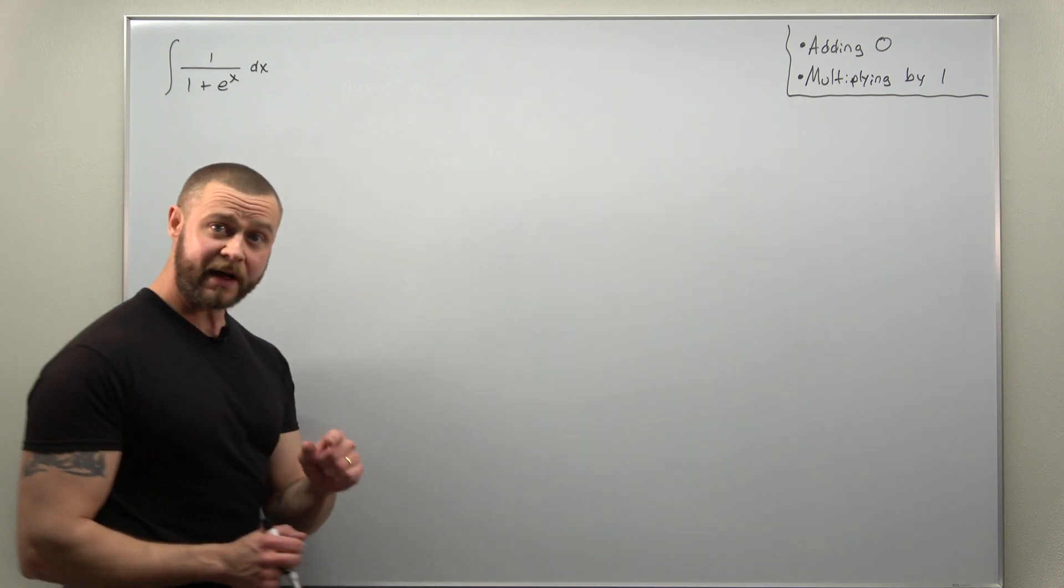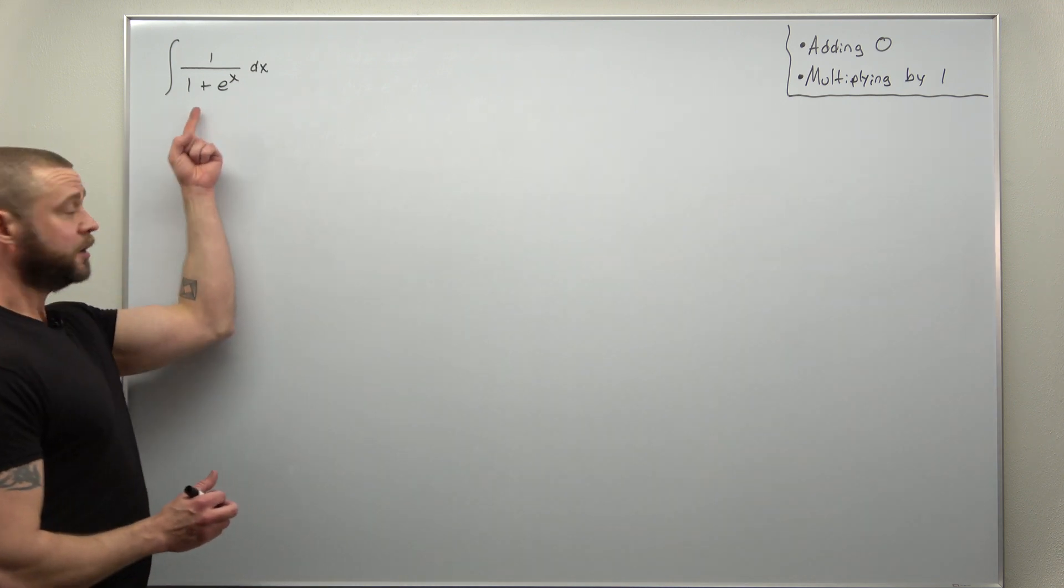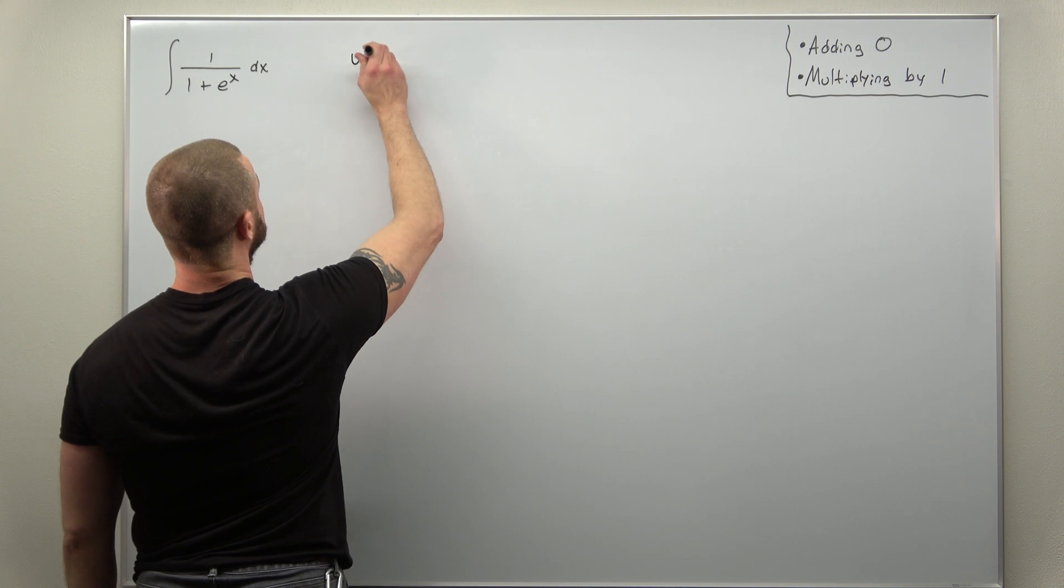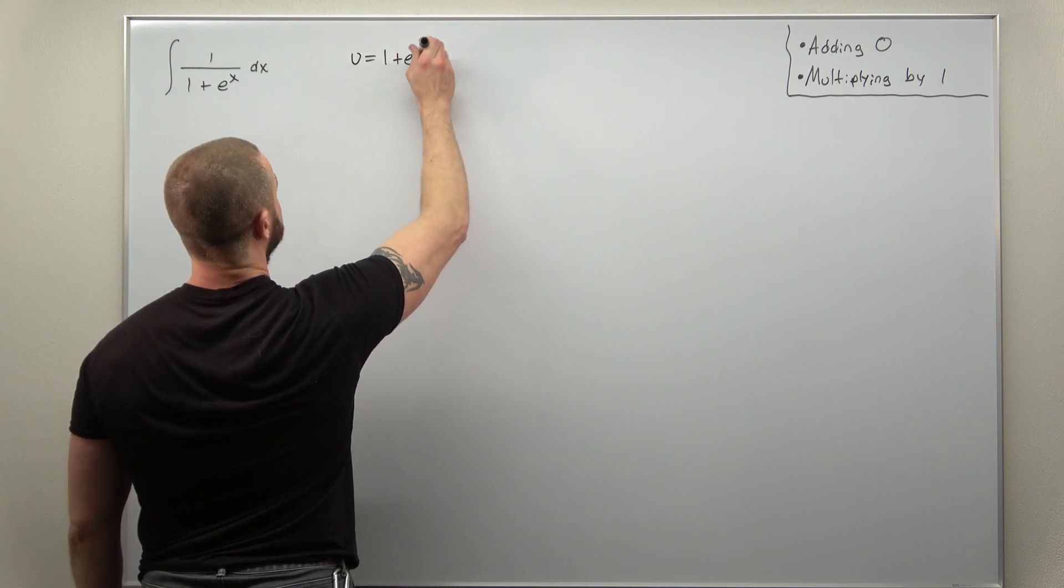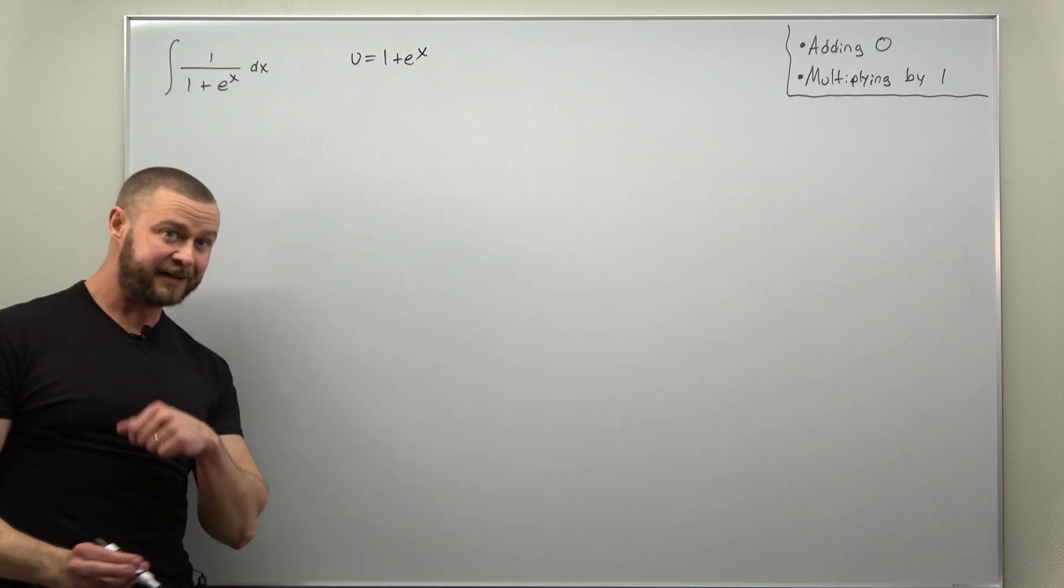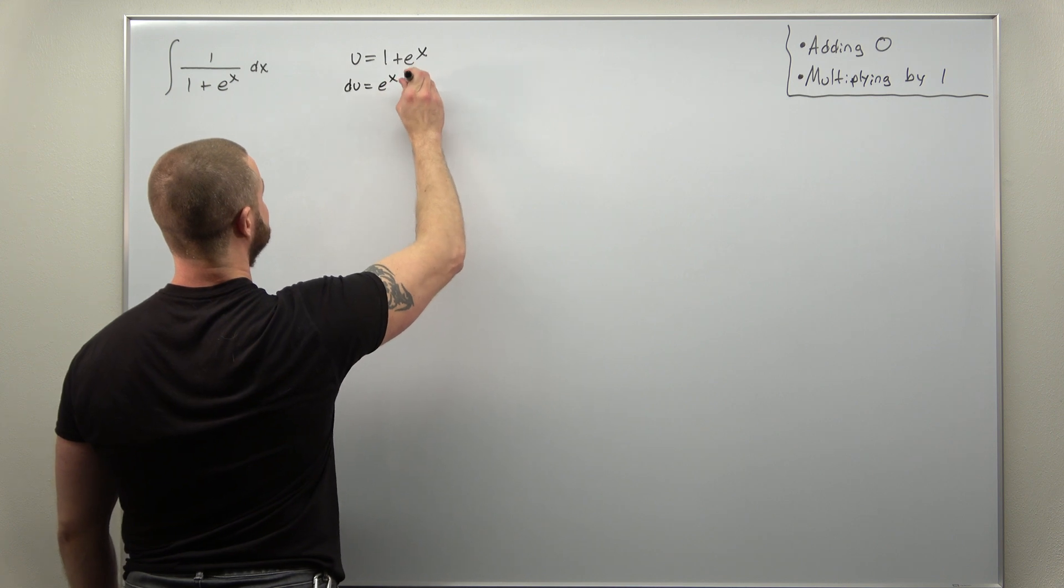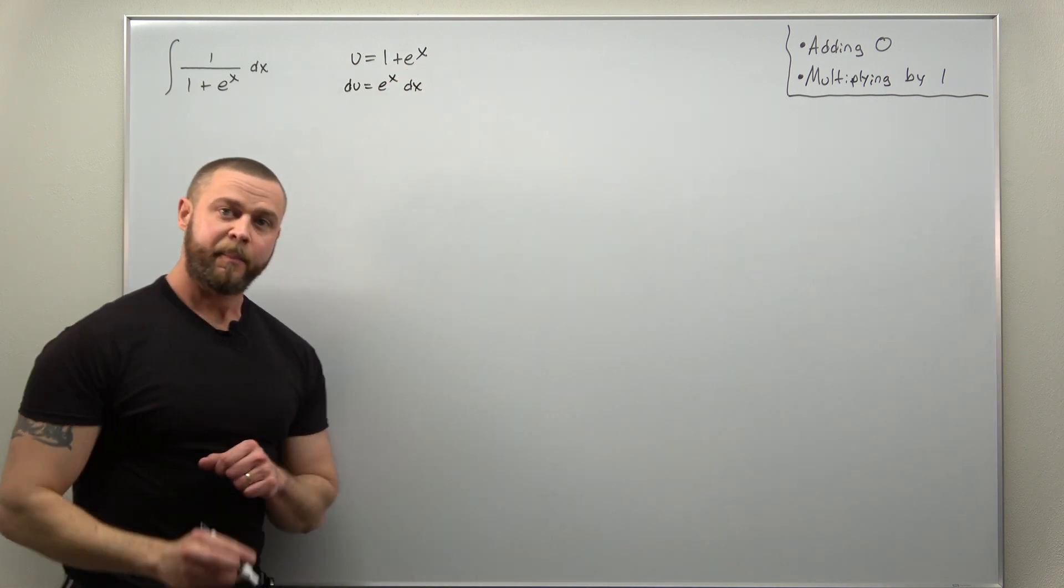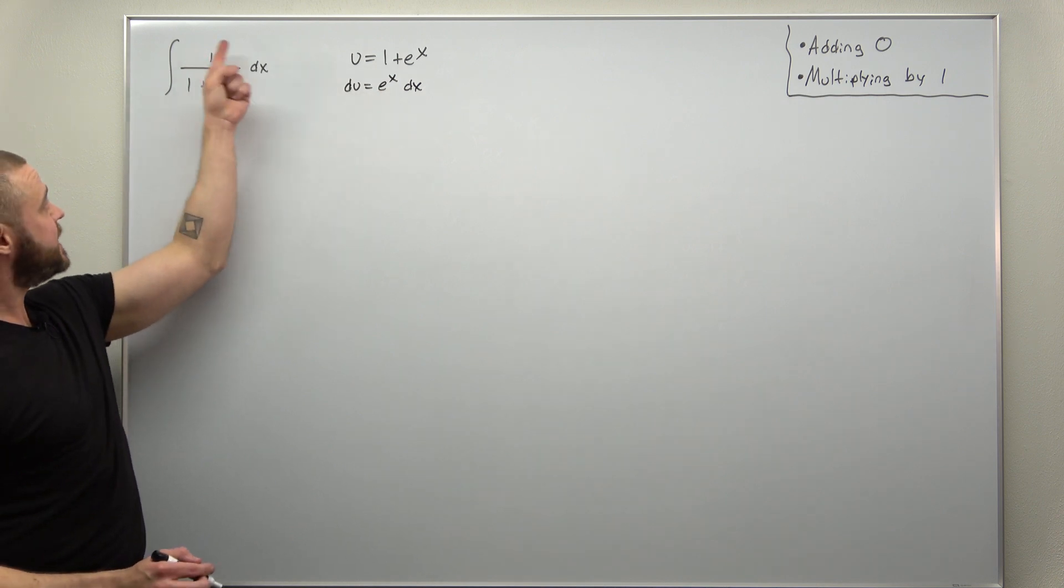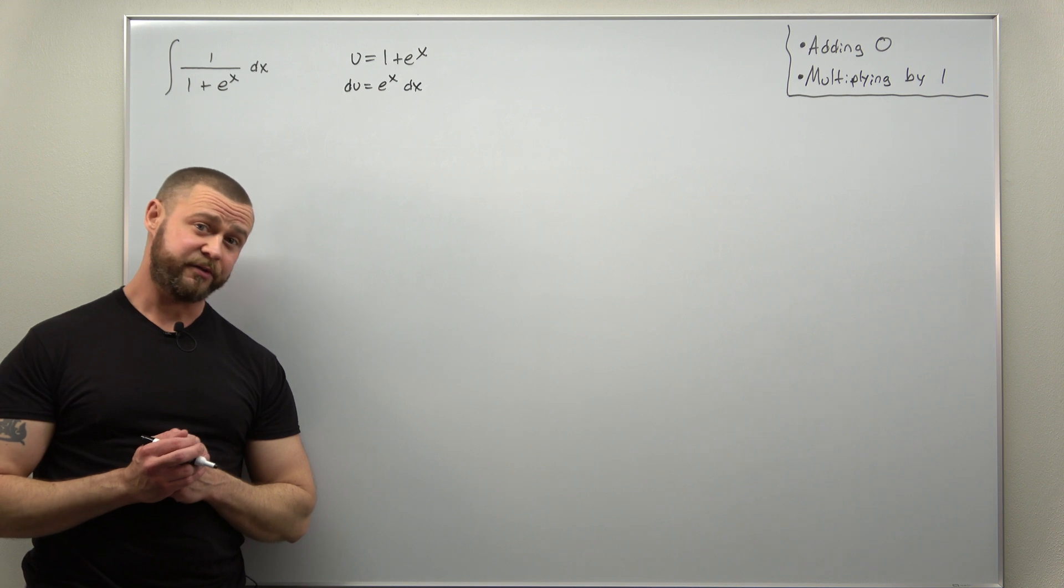All right, so let's go ahead and think of what we might try for our substitution: u as 1 plus e to the x. And in order for that substitution to work, we would need the corresponding du, and that comes out to e to the x dx. But notice we're missing an extra factor of e to the x, so that way we can rewrite this appropriately in terms of u.